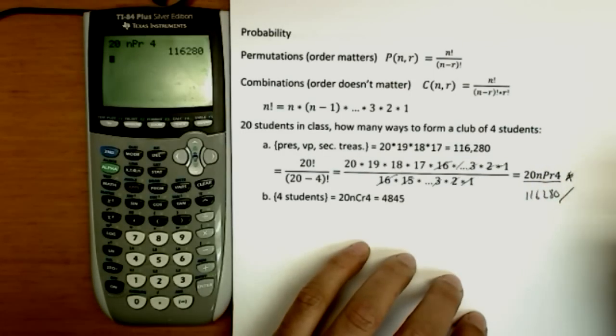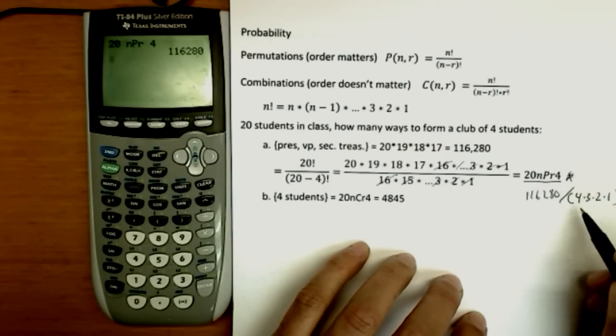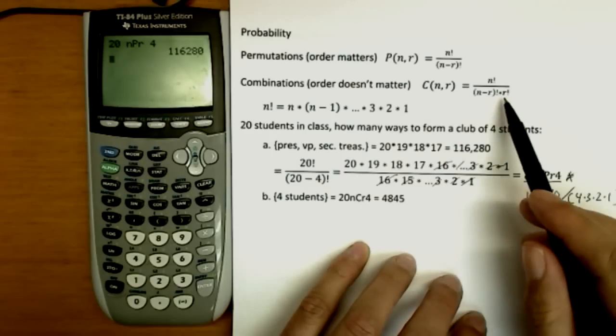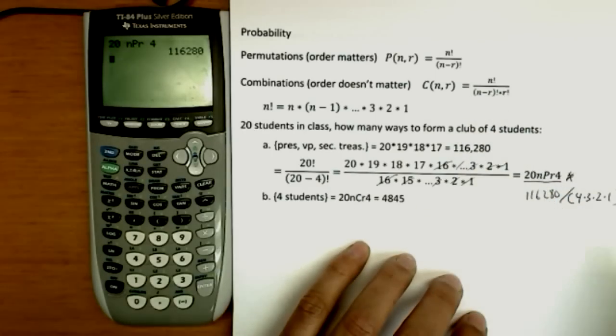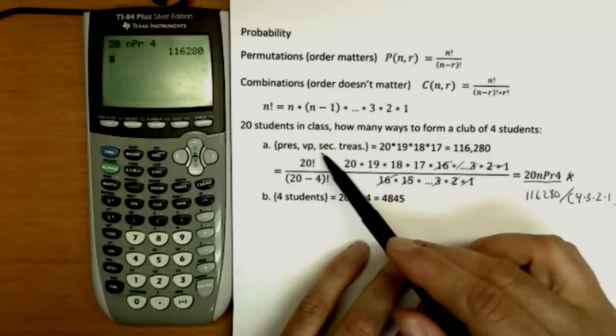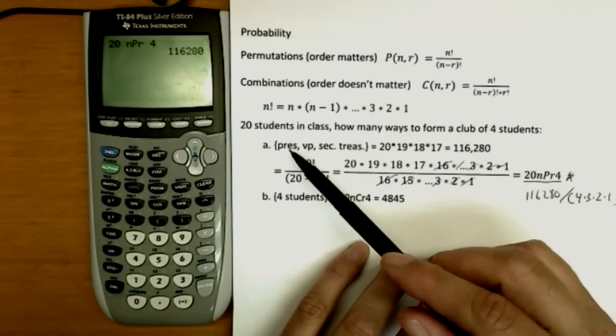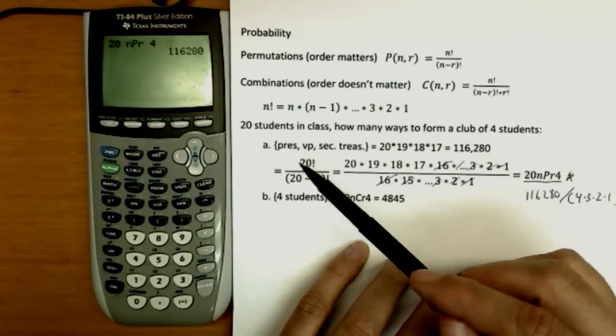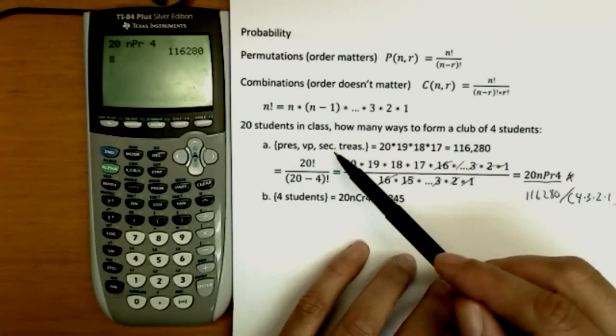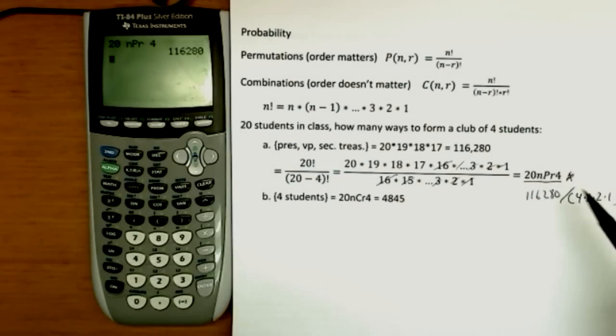He could have been in four different spots. So if we take that previous answer, that 116,280, and we think about it, each of the people in the club, well, there were four of them that could have been chosen first, then three for second, two for third, and one for last. Or four factorial or R factorial as the formula says. So this club is repeating the same four people over and over again. And there's 24 different ways it could have done it. If you divide this by 24, you'll get the right answer.